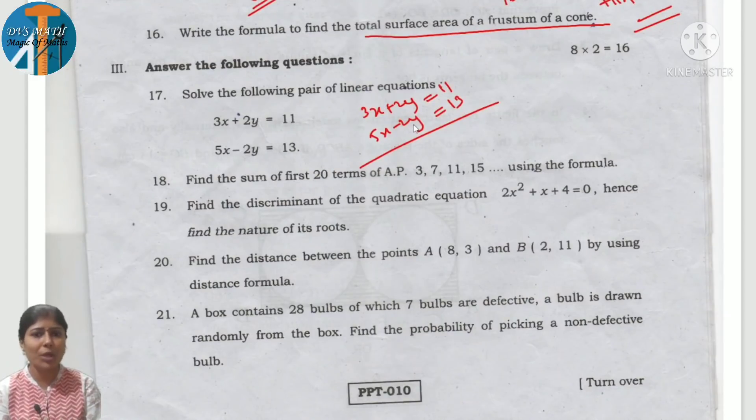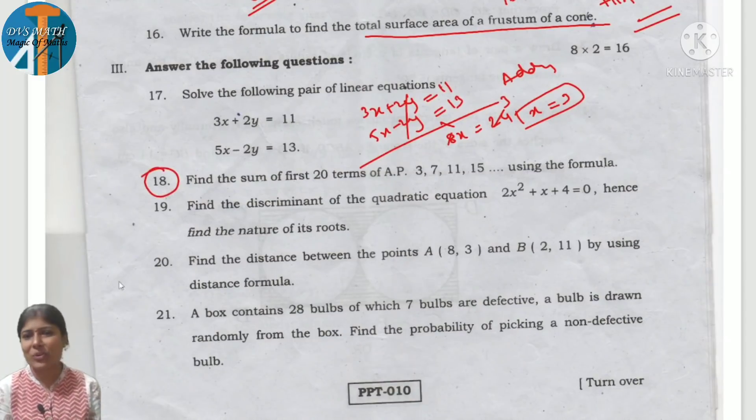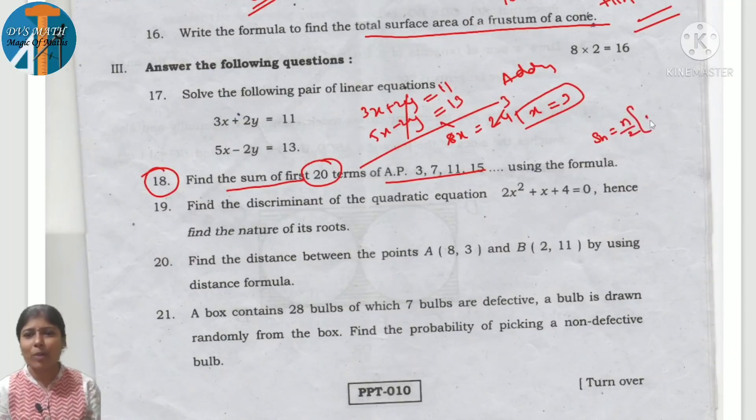Solve the following pair of linear equations. Common coefficient: one plus, minus. Adding them, 2y minus 2y cancel. 3x plus 5x is 8x. 11 plus 13 is 24. So 8 ones, 8 threes. x is equal to 3. Substitute this value, you are going to get the y value.